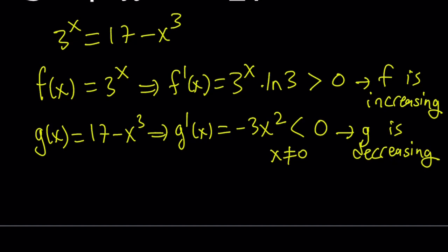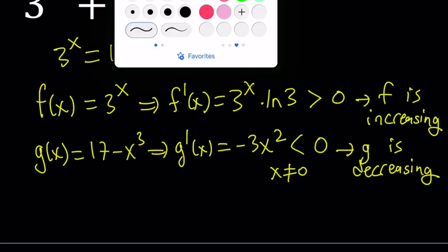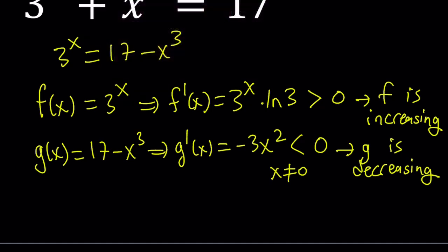So we basically have a function that is increasing, another function that is decreasing, and they are equal to each other at a certain point, which means there's only one solution. And in this case, that happens to be x equals something, right? Let's go ahead and find out.